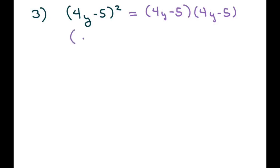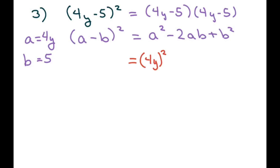But what we have here is a minus b quantity squared where a equals 4y and b equals 5. It's a lot faster if you do it this way. So my a is 4y, and my b is 5.